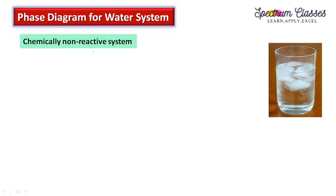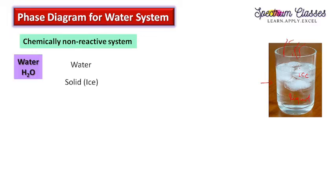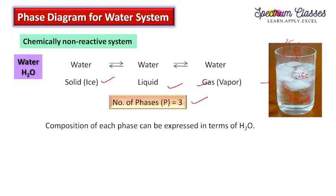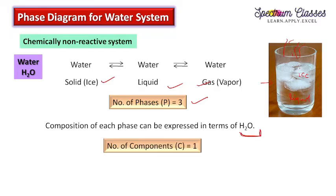The water system is a chemically non-reactive system. It has three different phases: ice (solid), liquid, and gas. All three are in equilibrium, and all three phases are defined in terms of H₂O composition, so this is a one-component system. I have already discussed all such things in my previous video, so you can go and check that.